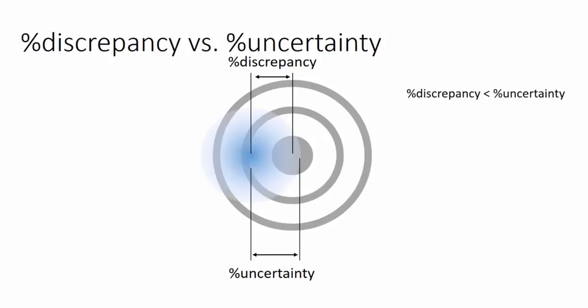So your percentage uncertainty actually covers that difference. Because you're so fuzzy, it's not surprising that you're as far off as you are. In that sense, we will say then the experimental value agrees with the reference value. That's the key word we use, agrees.